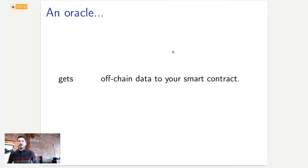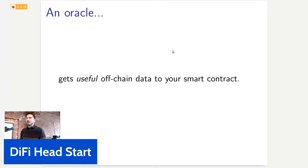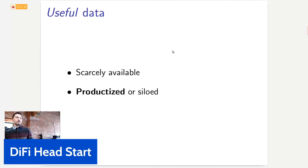That definition is correct, but not very useful, because if you think about all the data in the world, pretty much all of it is off-chain. A lot of off-chain data is quite irrelevant to smart contract use cases. So I'll make a small adjustment: an Oracle gets useful data to your smart contract. And there are some properties of useful data that define essentially how Oracles should be designed.